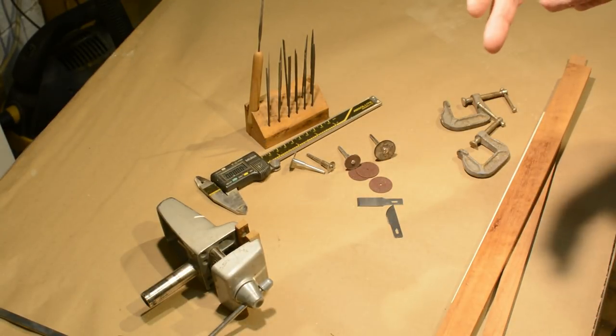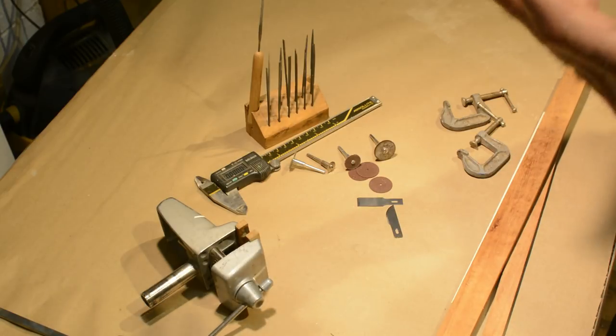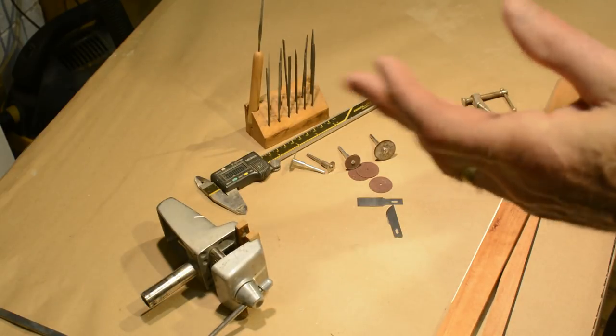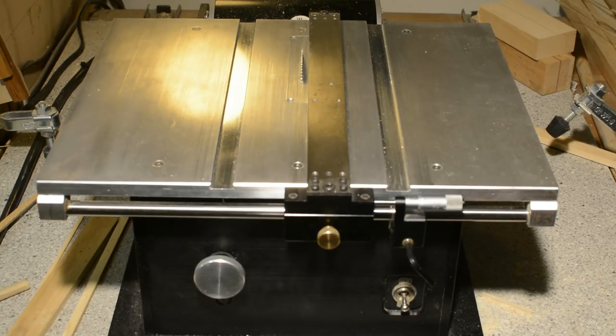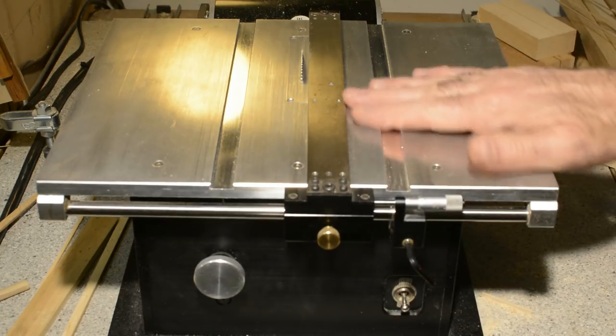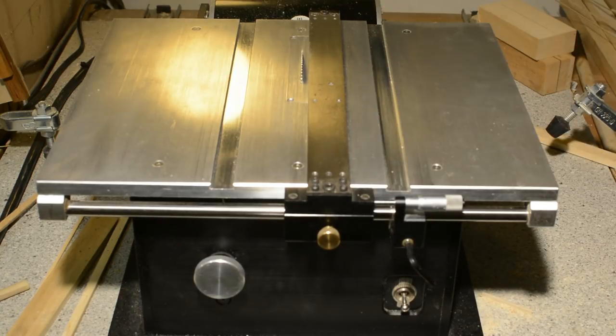And again, I started this whole thing by saying in a perfect world, there are certain things that you would have. And one of those things is a table saw. So here's my table saw. It's a Burns saw made by Jim Burns down in Florida. Great little machine.